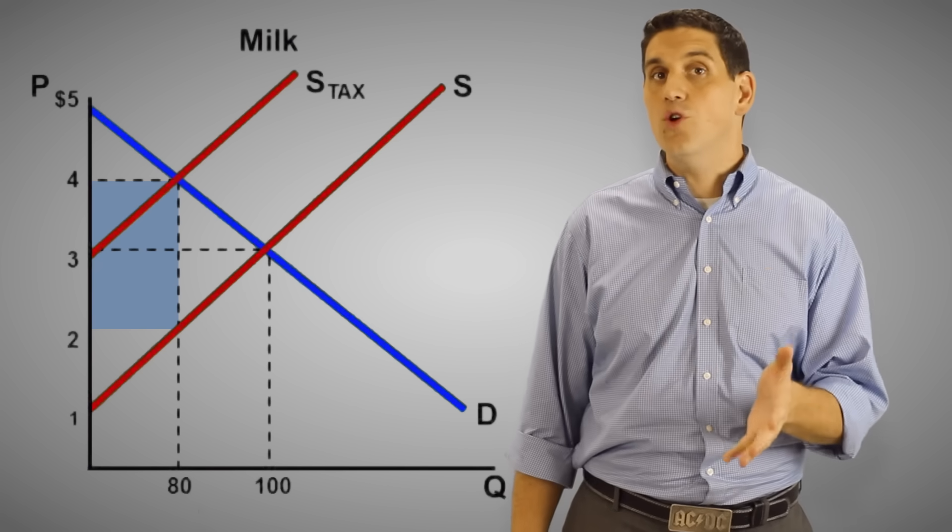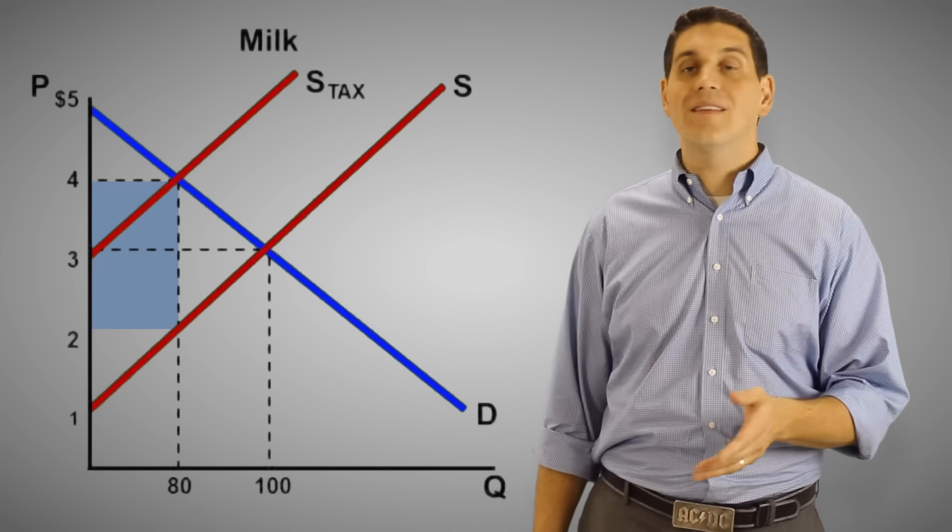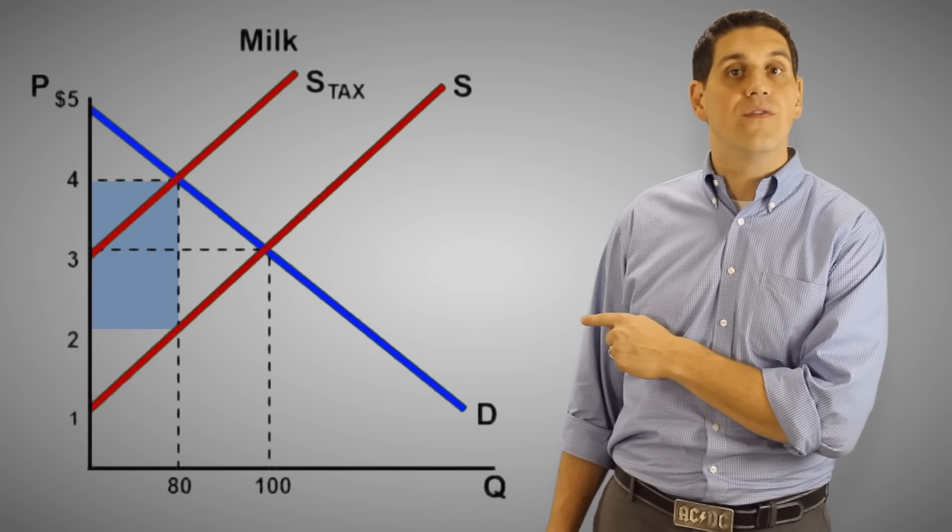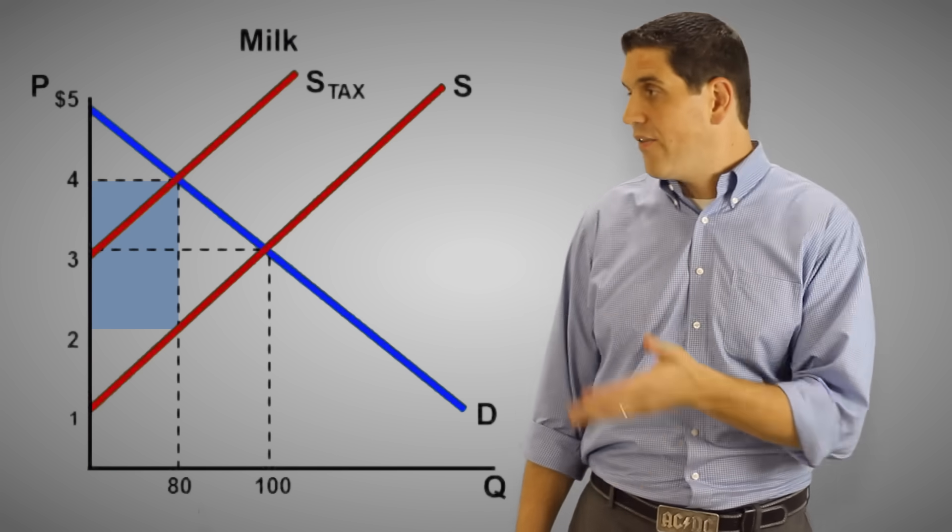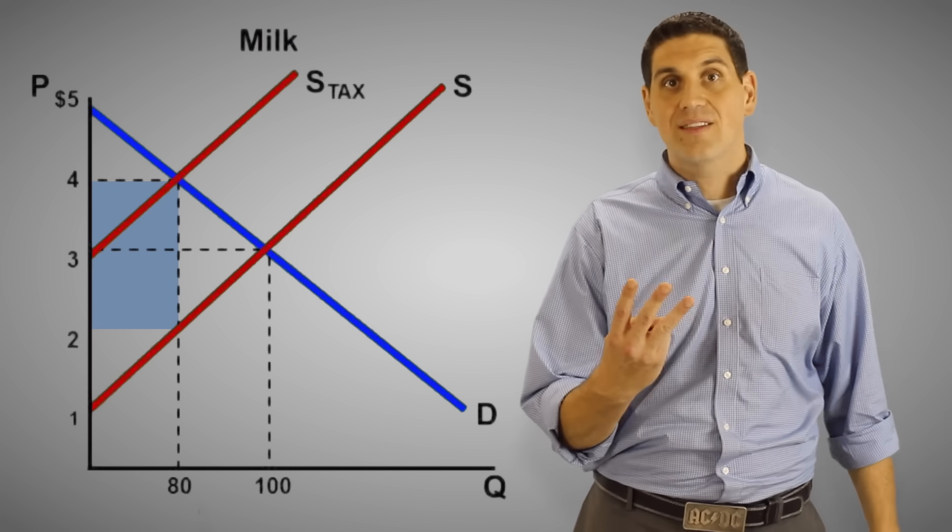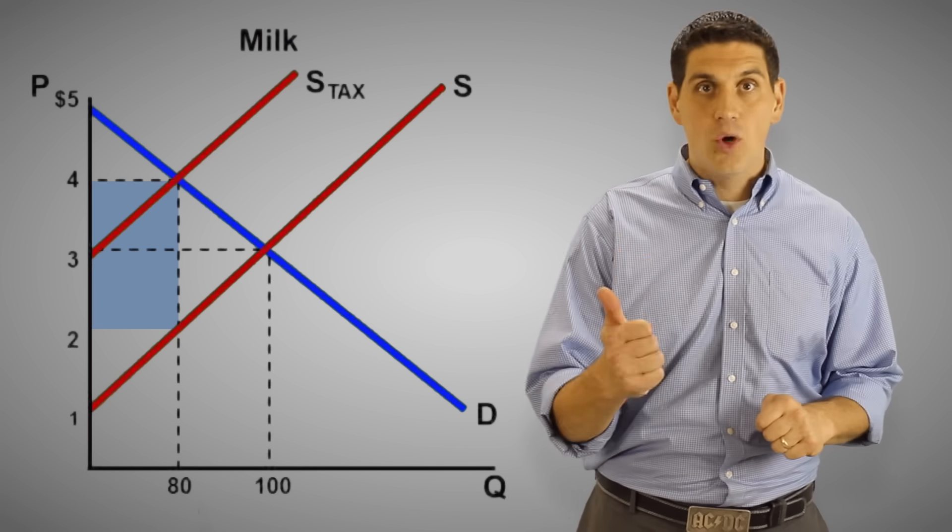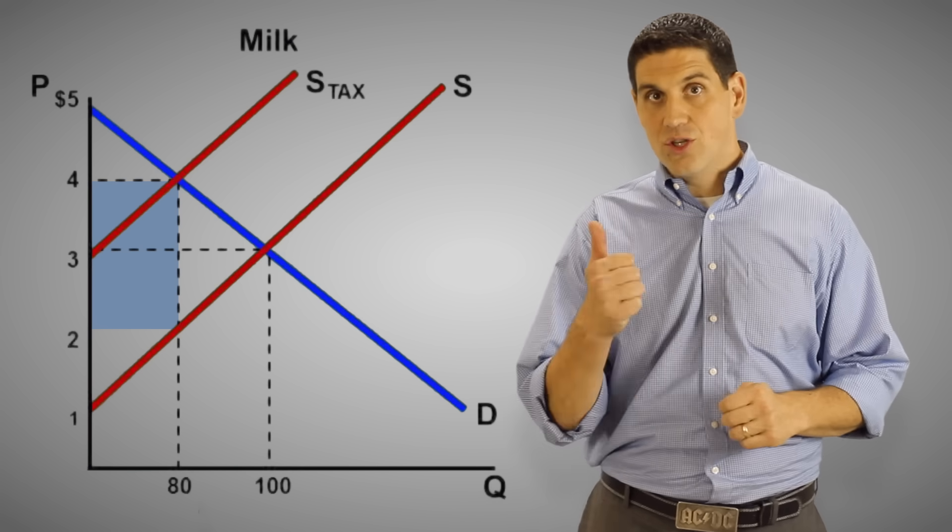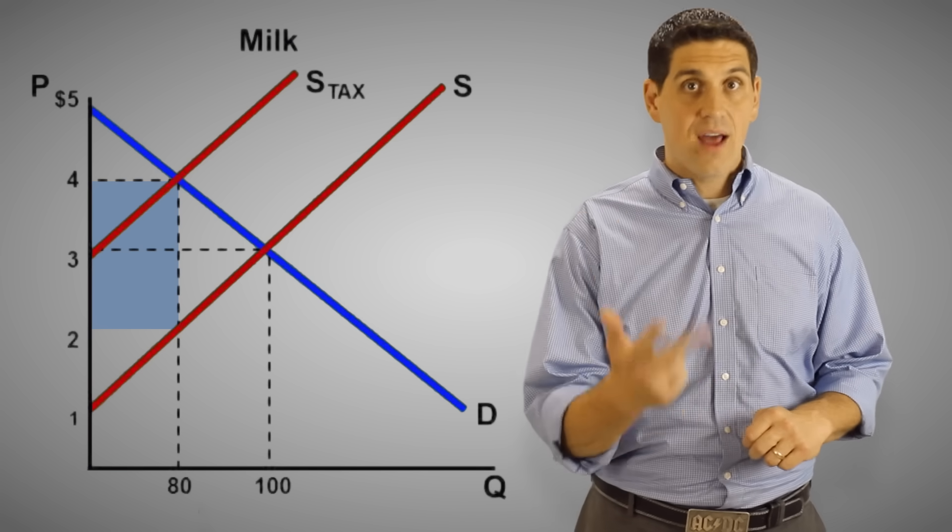That $2 tax times a new quantity of 80 represents the $160 of tax revenue that goes to the government. And the reason why there's this tax wedge is because now there's three people involved with this transaction. Before the tax, it was just consumers and producers. But now it's consumers, producers, and the government.